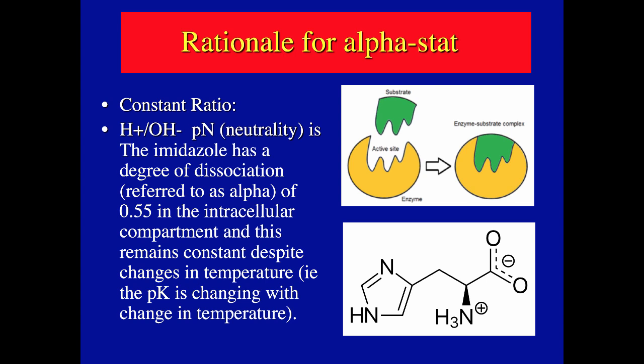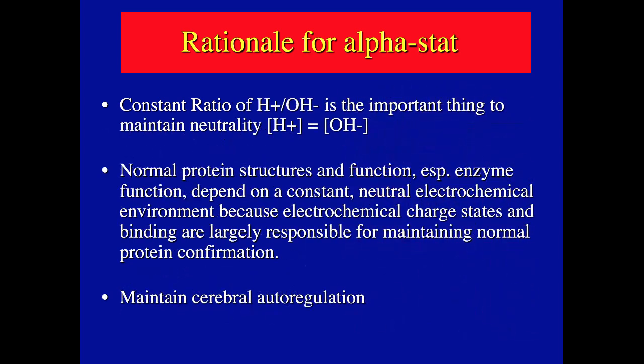This is especially valuable for cold-blooded animals whose blood temperature changes significantly — the enzymes still function correctly. That's one of the theories for using alpha stat in cardiopulmonary bypass: the constant ratio of hydroxyl to hydrogen ions is maintained, yielding normal protein structure and function throughout the temperature change.